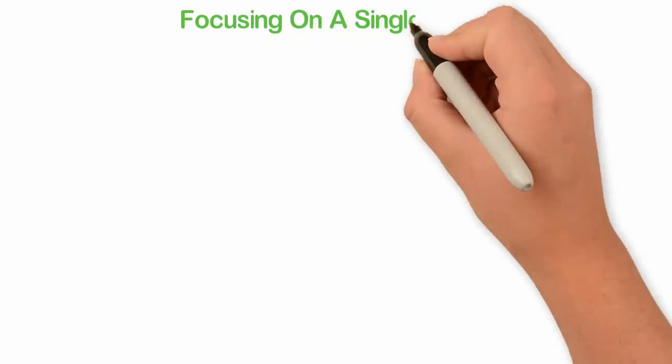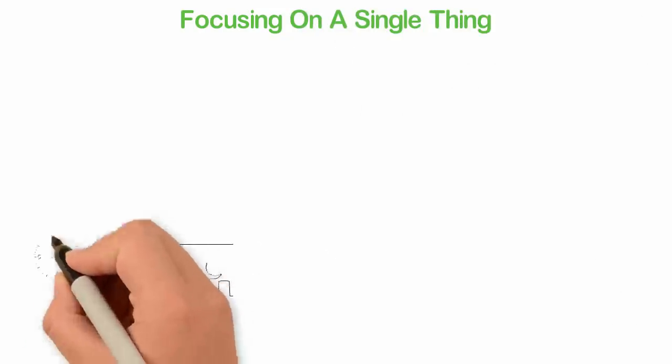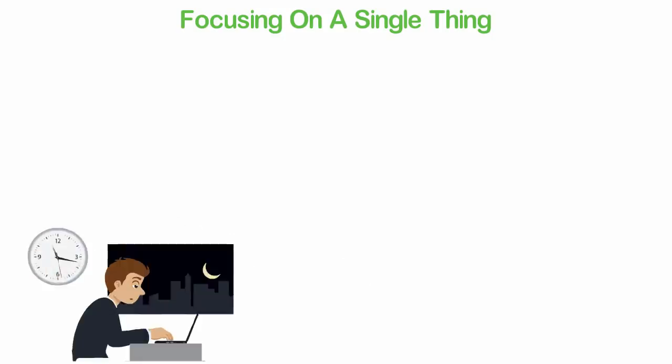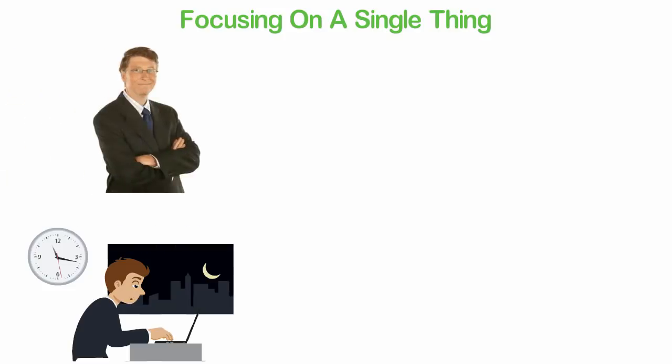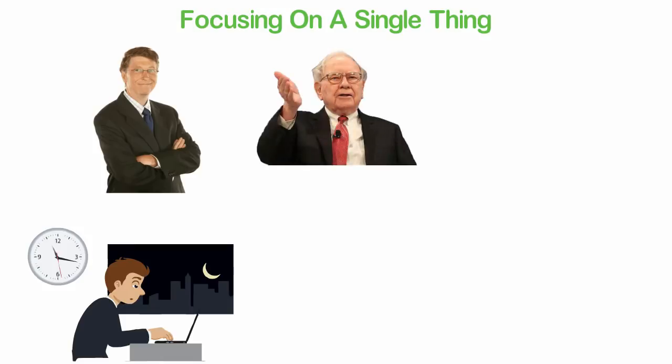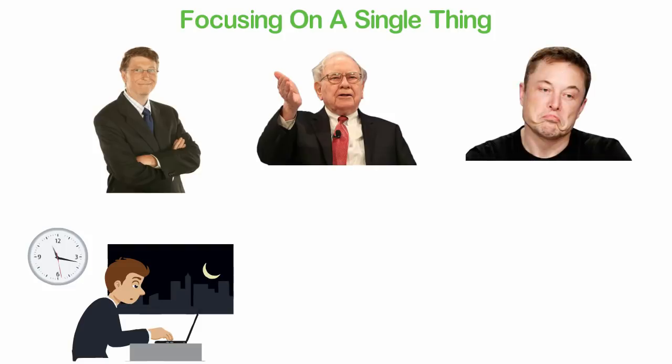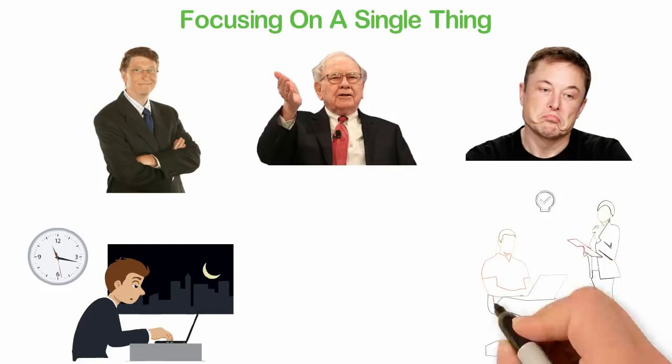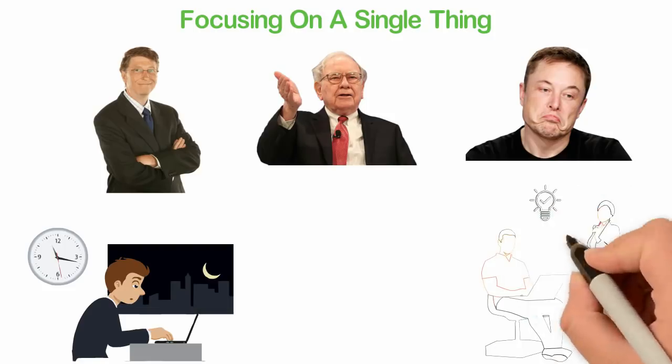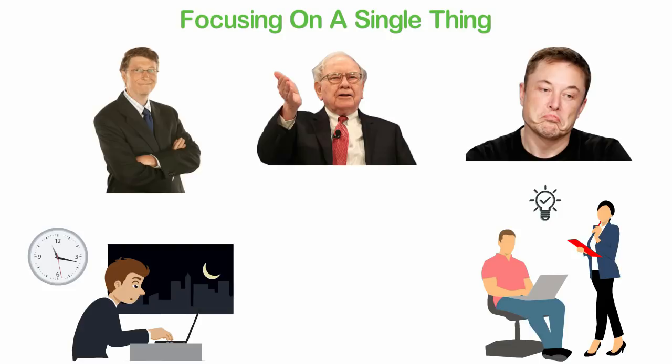Focusing on a single thing. The second thing top most successful people do differently is that they are not generalists. They spend all their life focusing on a single thing. Bill Gates has been obsessed about computer software all his life. Warren Buffett has done nothing else with his life other than building businesses and investing. Guys like Elon Musk could do more things, but they don't do much until they are successful in one thing and have the resources to employ highly competent people to handle other things for them.